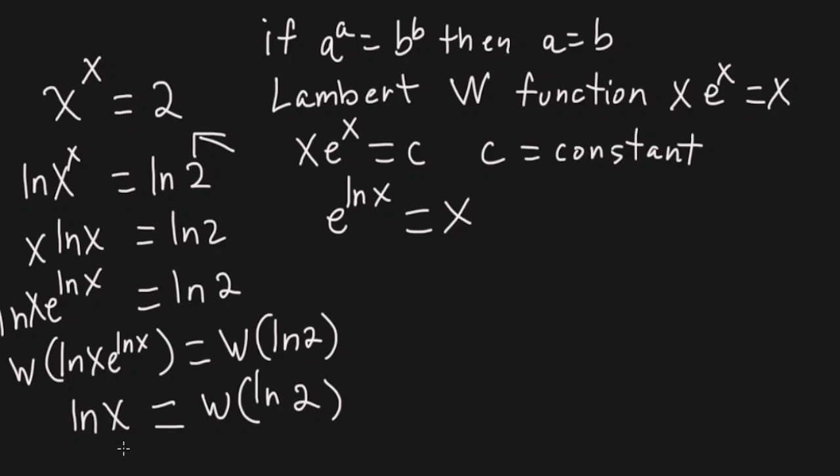Okay, we still need one more step to get x by itself. Well, we take e to both sides of this. We get e to the natural log of x is equal to e to the W of natural log of 2. Well, e to the natural log of x is just equal to x. So x is equal to e to the W of natural log of 2. And this is the answer.